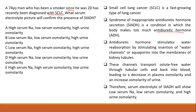So the appropriate electrolyte picture will be: low serum sodium, low serum osmolarity, and high urine osmolarity. Your answer should be B.